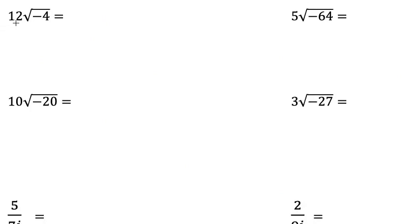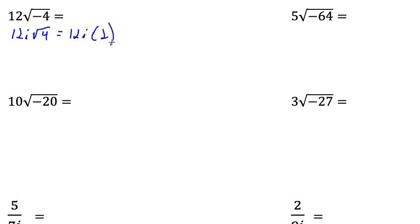Here's something a little different. There's a whole number in front of the square root — we need to remember this means 12 times the square root of negative 4. I'm going to pull out the square root of negative 1, so this means 12i times the square root of 4. The square root of 4 equals 2, so this equals 12i times 2, which equals 24i.